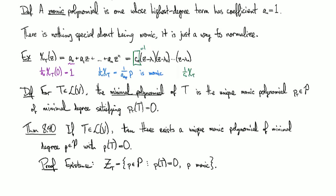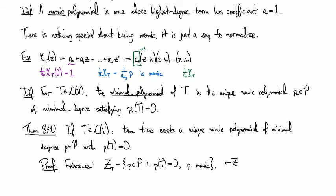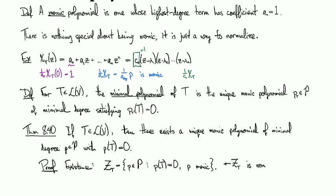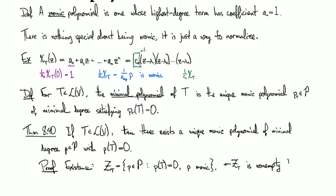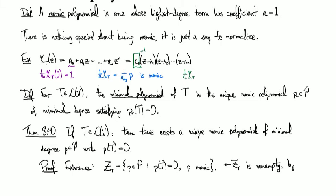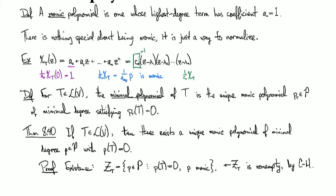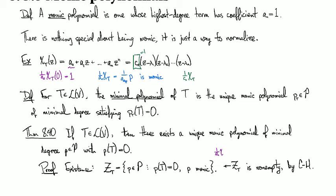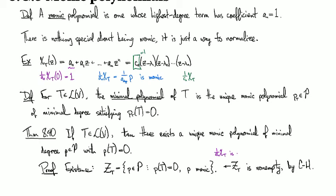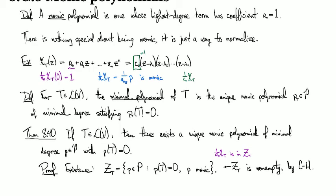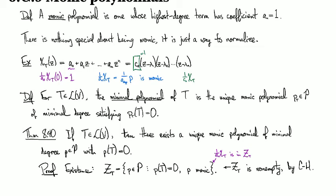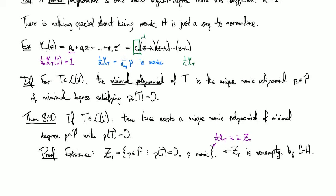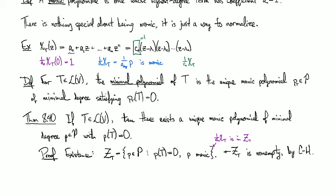Okay. So now this Z_T set, this Z_T of polynomials, is non-empty by the Cayley-Hamilton theorem. And so that's just, as we pointed out just a moment before, 1 over a_N times χ_T is an element of this set, right? So it's monic and it kills T. Or T kills it, depending, I guess, on how you want to think about that.